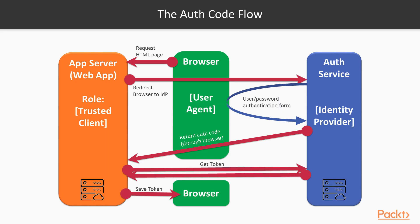In the authentication code flow, the browser, which calls our UI service, is redirected to the identity provider's sign-in page. With the password given, it is then redirected back to the service with a code, which will be exchanged by the service for an access token that can be sent back to the browser for use in following transactions. This flow has the benefits of authenticating our service with the identity service and not having to expose the token to the browser. This is done by saving it in a secure cookie, which is not exposed to the client-side code.